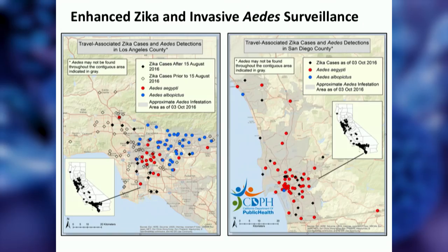Here are maps from last summer in Southern California — LA on the left and San Diego on the right. What you're looking at is the co-occurrence in space of either of the two mosquito vectors, shown in colored circles, or Zika cases in travelers, shown as diamonds. When a Zika case is reported to CDPH, mosquito and vector control districts go out to the case's residence, try to kill adult mosquitoes in the area, and then remove standing water containers to eliminate breeding sites.